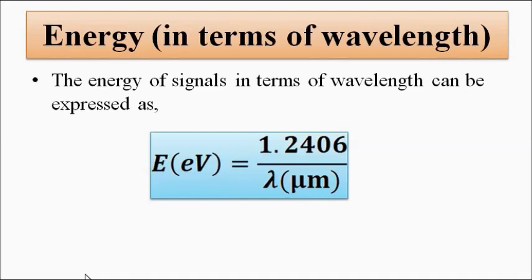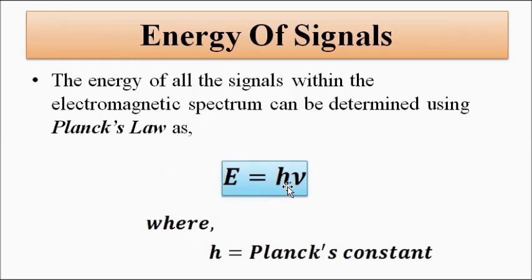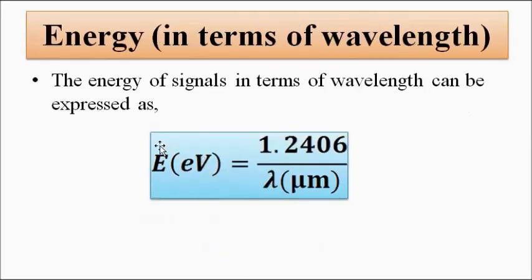If we need to represent this energy in terms of wavelength, we can use the relation λν = c, where c is the speed of light in vacuum (3 × 10⁸ m/s), as discussed in the previous video. Substituting ν into Planck's Law gives the energy in terms of wavelength. The energy in electron volts equals 1.2406 divided by λ, where λ is the wavelength in micrometers.